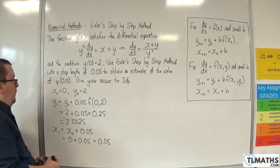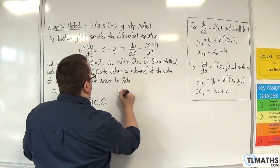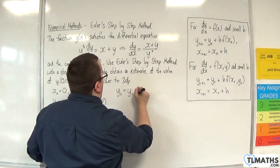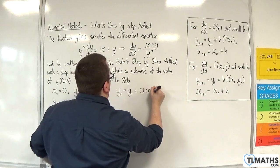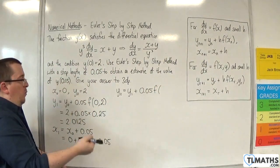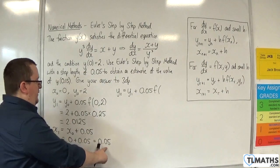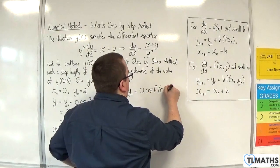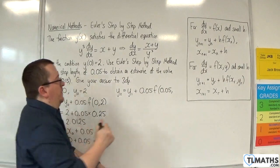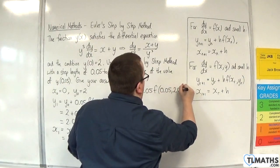Okay, so now we can find y₂. So y₂ will be the previous y value, y₁, plus the step length 0.05, times f(x₁, y₁). Now x₁ is 0.05, and y₁ was 2.0125.